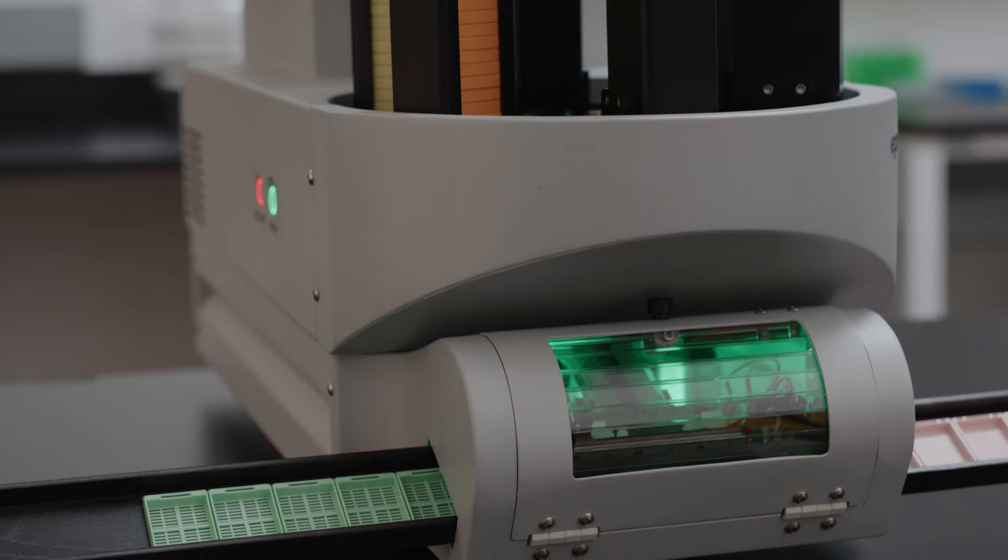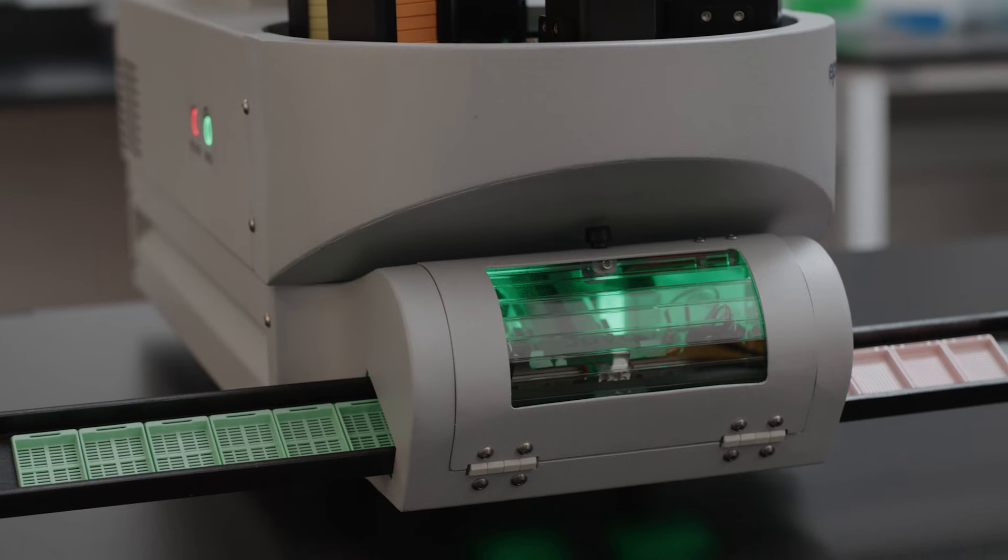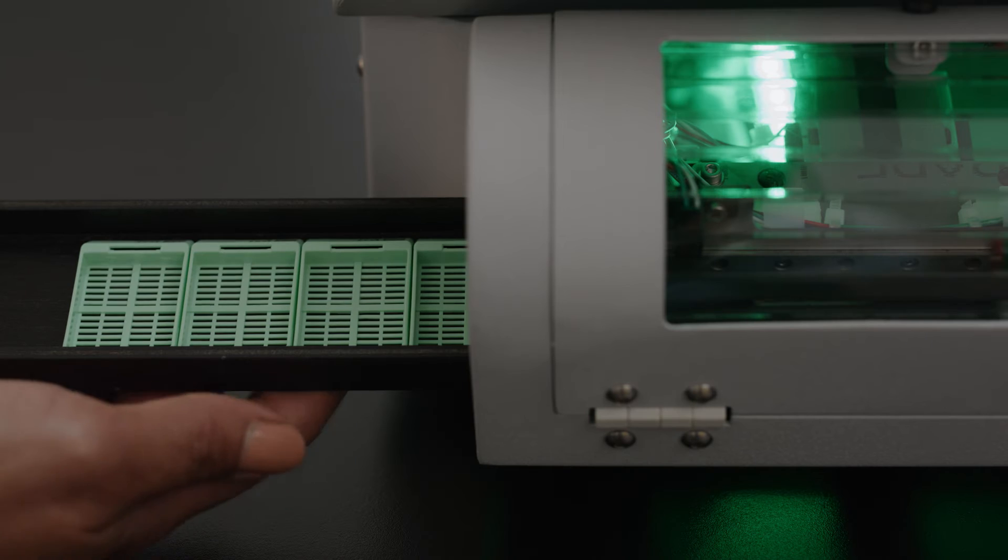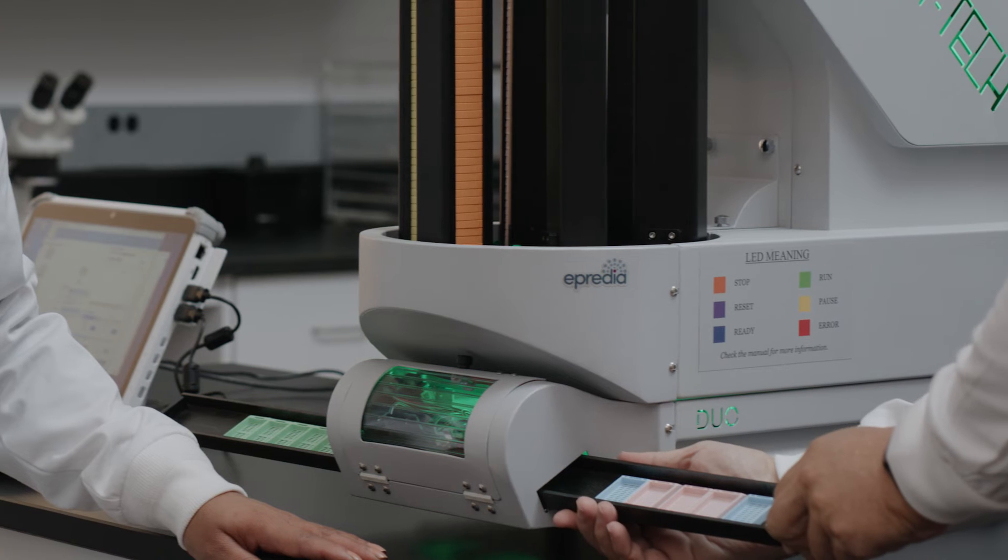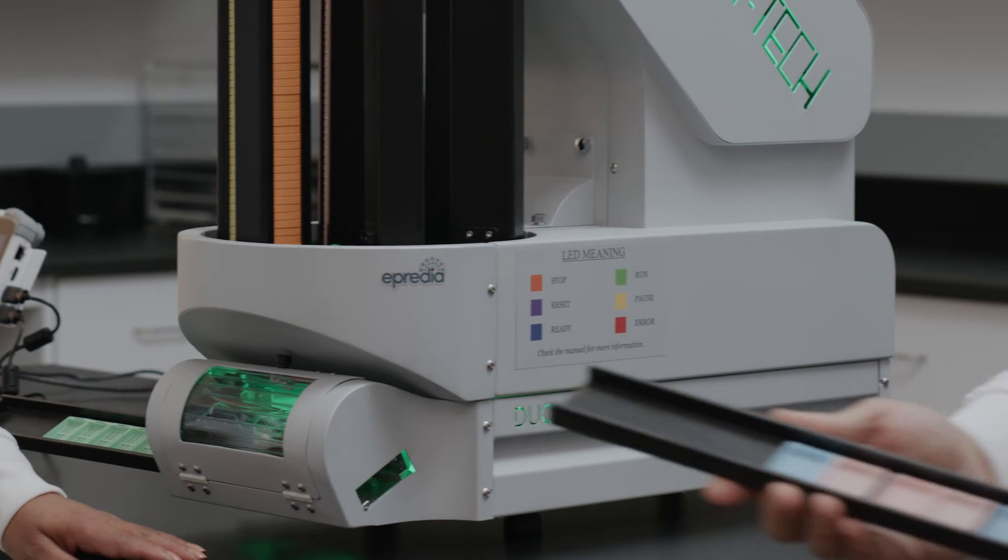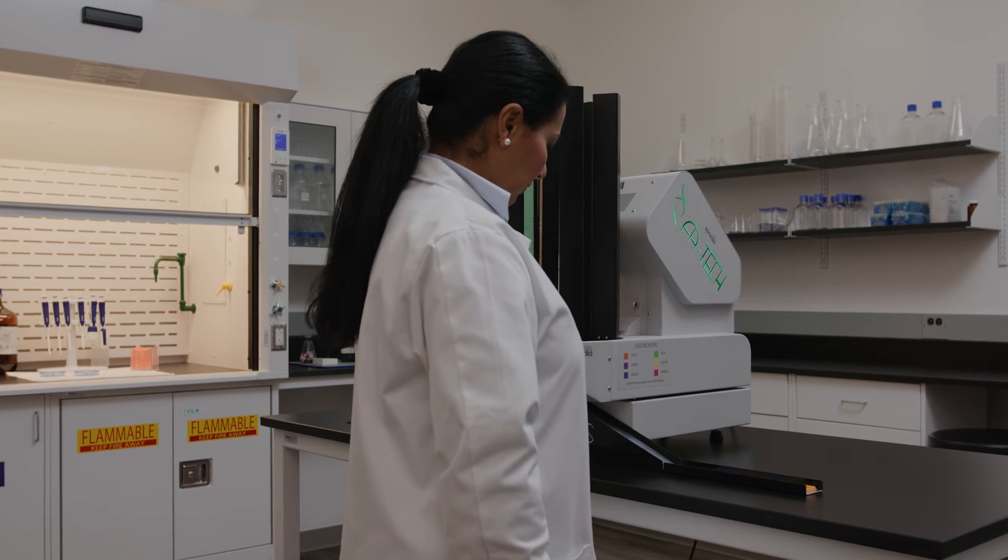The Duo accessory helps deliver cassettes to the left and right of the Vega so that one instrument can be shared between two grossing stations. The side delivery system can also be used to maximize laboratory bench space.